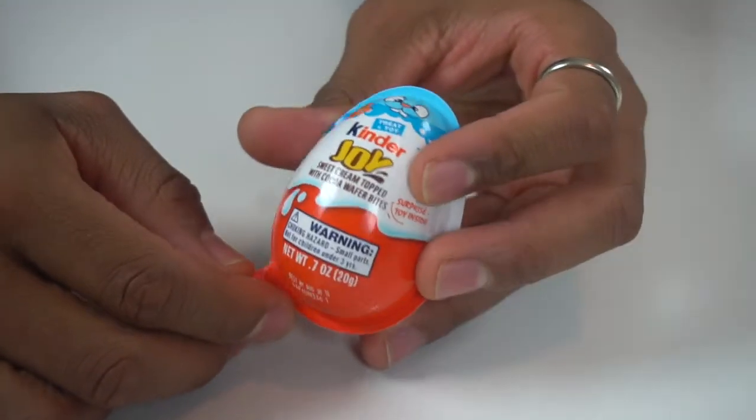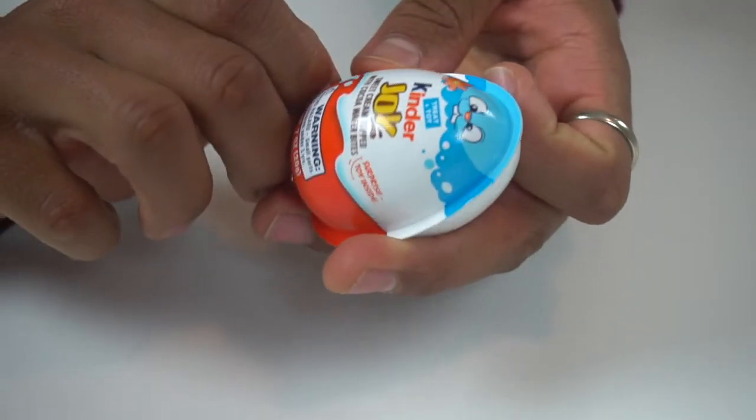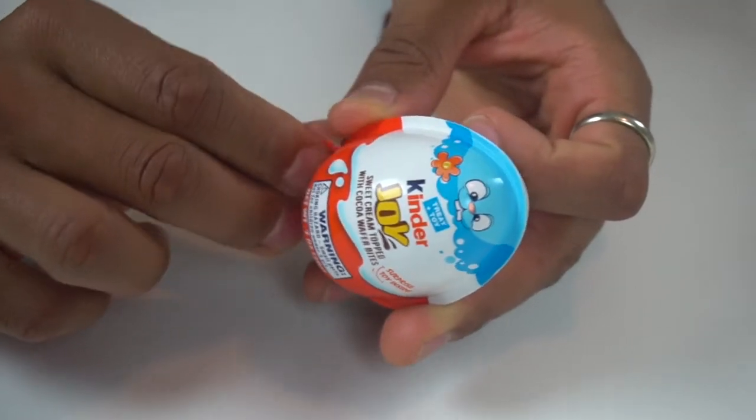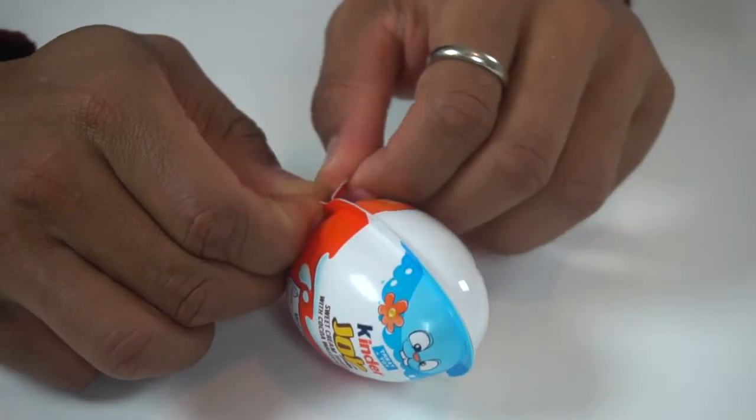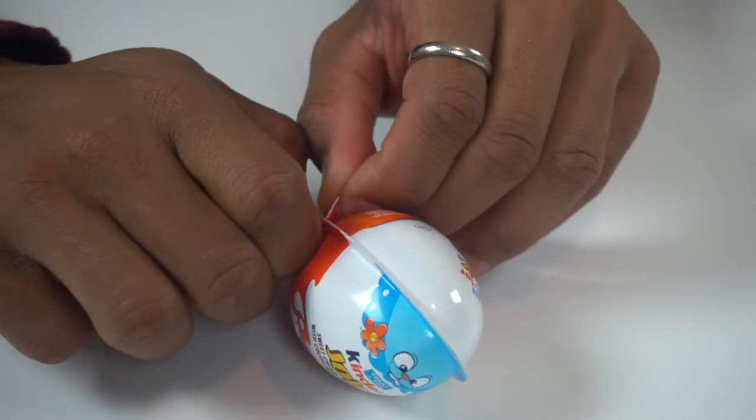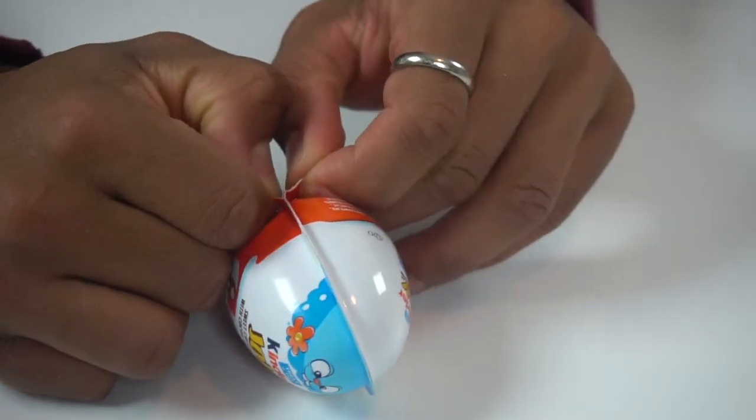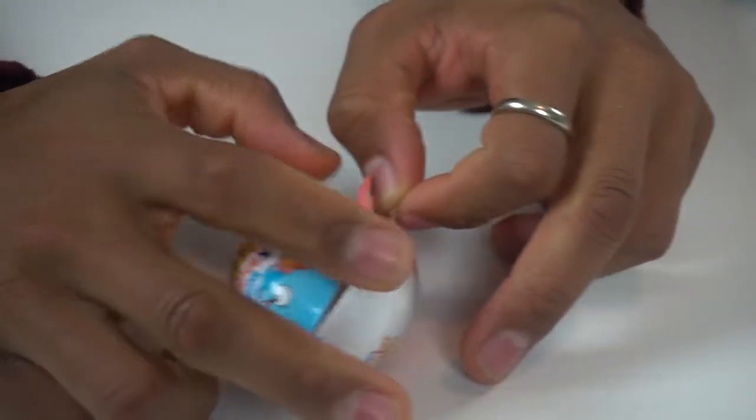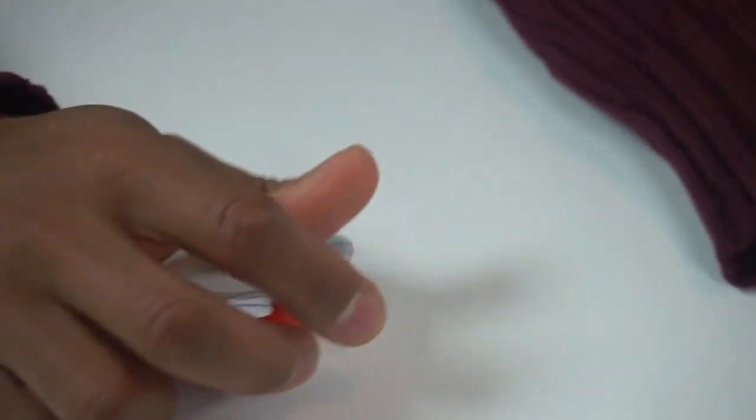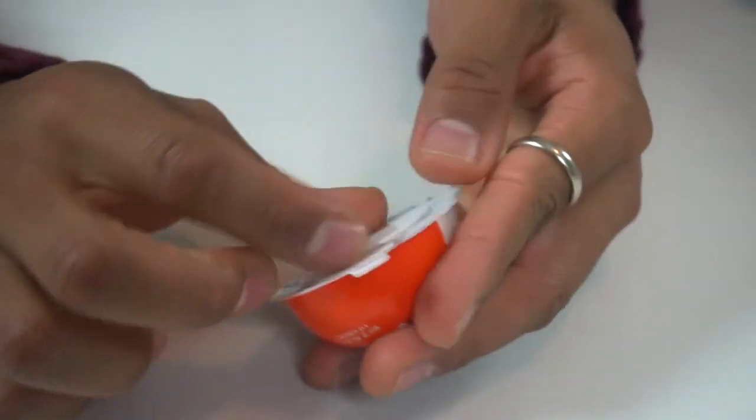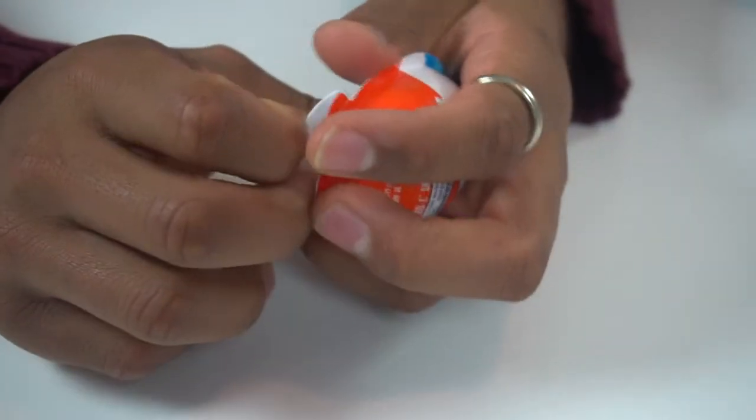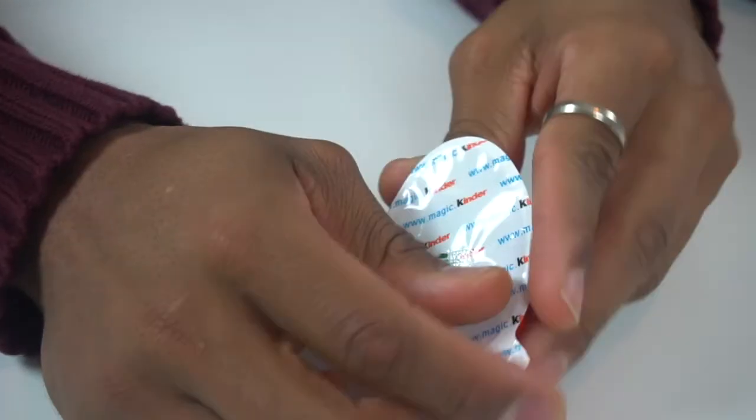All right, we have one left, right? And I wonder if my theory is correct. If you get the different colors, they've all had different things in them. So no duplicates. Because we on purpose got different colors. Oh, it's chocolate. You weren't with us when we bought these, but we got as many different colors as we could.